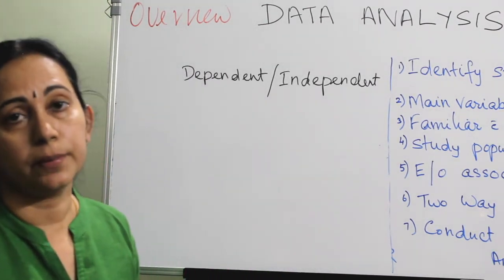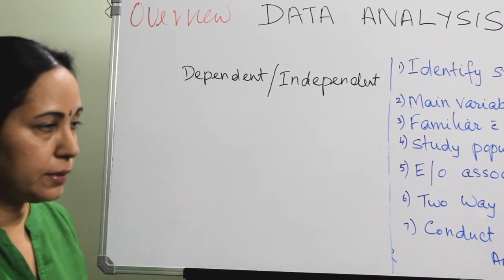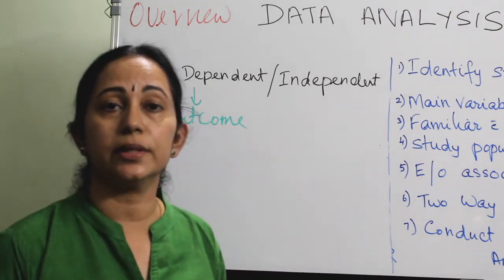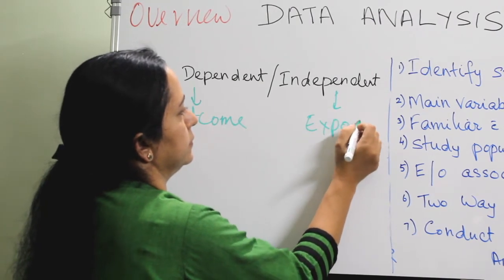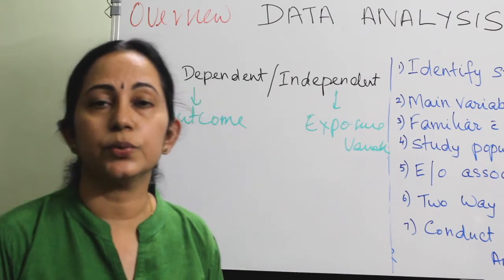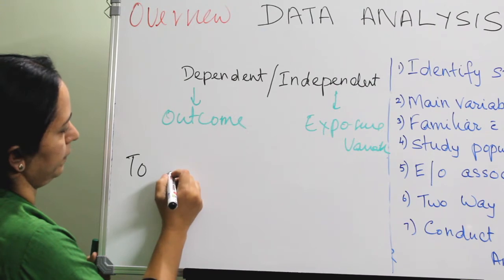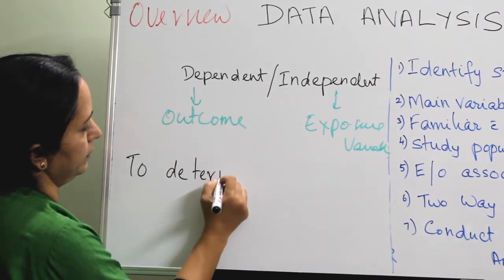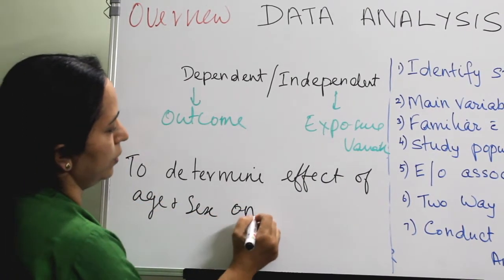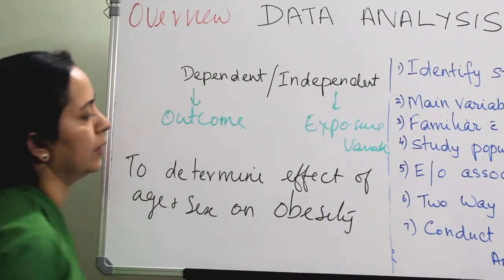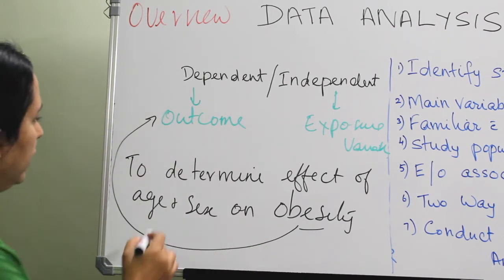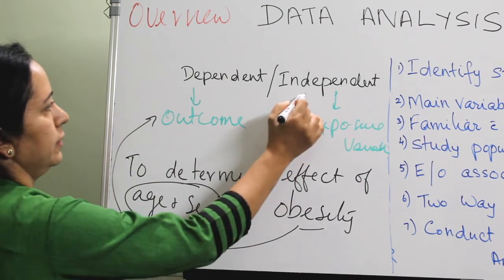Another important terminology to remember is dependent and independent variables. The dependent variable is the outcome of interest, and the independent variable is otherwise called the exposure variable. For example, in a study to determine the effect of age and sex on obesity, obesity is the outcome — so it becomes the dependent variable — and age and sex become the independent variables.